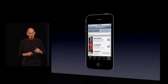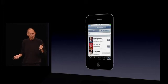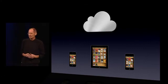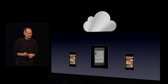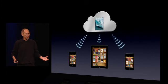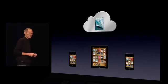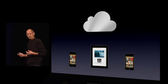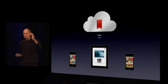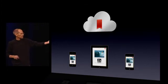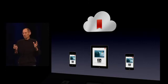iBooks — same thing. You've got your purchase history of all the books you've bought on any device. You want to get it on your iPhone? Just push the button, it downloads to that device. When you buy a new iBook, it downloads to all your devices now. And if you're reading it on one device — let's say you're reading it on your iPad and you've just got to run — you bookmark that page, that bookmark is sent up to the cloud and stored, and pushed to all your other devices, so maybe you can read the rest of the chapter on the train to work. It all just works.